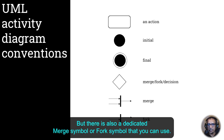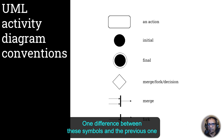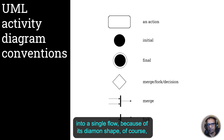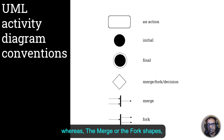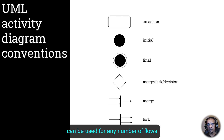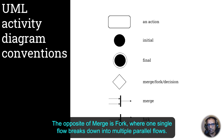There is also a dedicated merge symbol or fork symbol that you can use. One difference is that the diamond shape can merge only a maximum of three flows into a single flow, whereas the dedicated merge or fork shapes — the fourth and fifth ones — can be used for any number of flows. The opposite of merge is fork, where one single flow breaks down into multiple parallel flows.